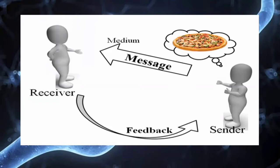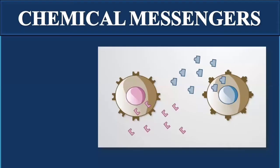Similarly, the human body is made up of trillions of cells. These cells communicate with each other to perform various functions and specific activities. The cells communicate by releasing specific chemical substances, which are also known as chemical messengers.